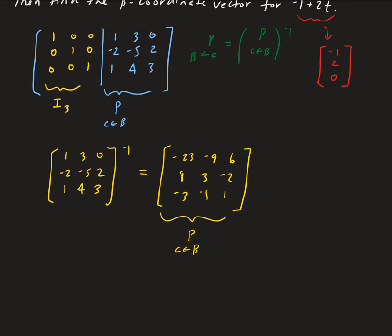For the inverse matrix, you can do this by hand. Remember that if you take the change of coordinates matrix going from beta to C and augment it with the identity matrix on the right-hand side, then go through the row operations, you end up getting the inverse matrix on the left-hand side. We did that earlier in the course.